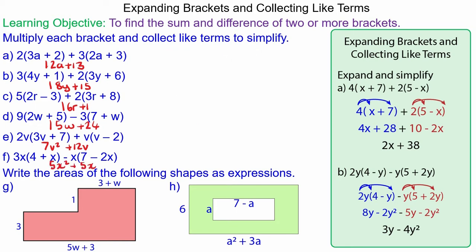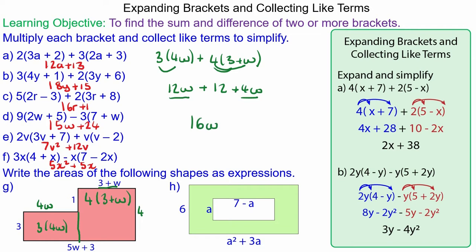For question g, we can split the shape into two rectangles where the length is 3 and the height is 4 which is 1 add 3. So the area is 4 lots of 3, which is 12. And the area of the other rectangle would be 5w add 3 take away 3, so that would be 5w, which would be 3 lots of 5w. So the total area would be 3 lots of 5w plus the other rectangle 4 lots of 3. And expanding this out we have 15w plus 12, and collecting like terms, 15w add 12. Actually, 12w plus 3 add 4w, collecting like terms, 12w add 4w is 16w add 12.